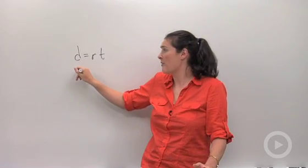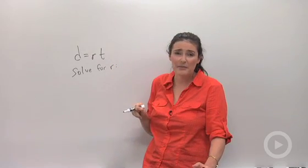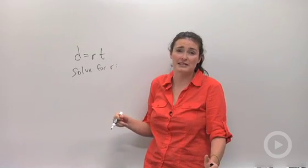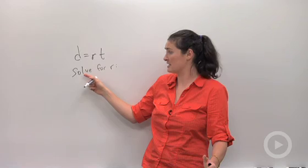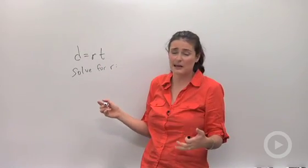What if this problem asks you to solve for R? What that means is get R all by itself. You're going to see this a lot. It's going to say solve for R, but there's no numbers involved. That's okay. You still use the same ideas.